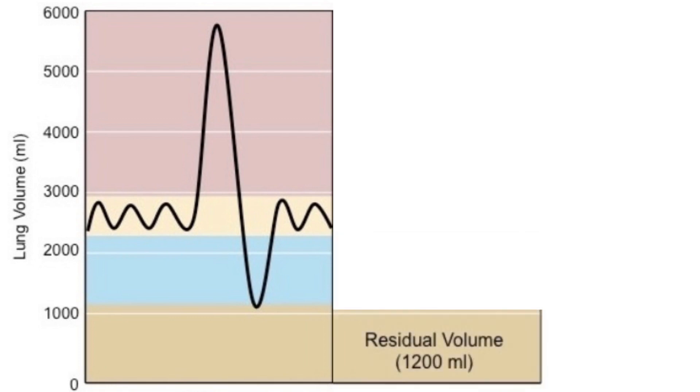Now, even after the deepest exhale, there's still some air left in the lungs. That's the residual volume, RV, about 1,200 milliliters. It ensures our lungs are never completely empty to prevent collapse.